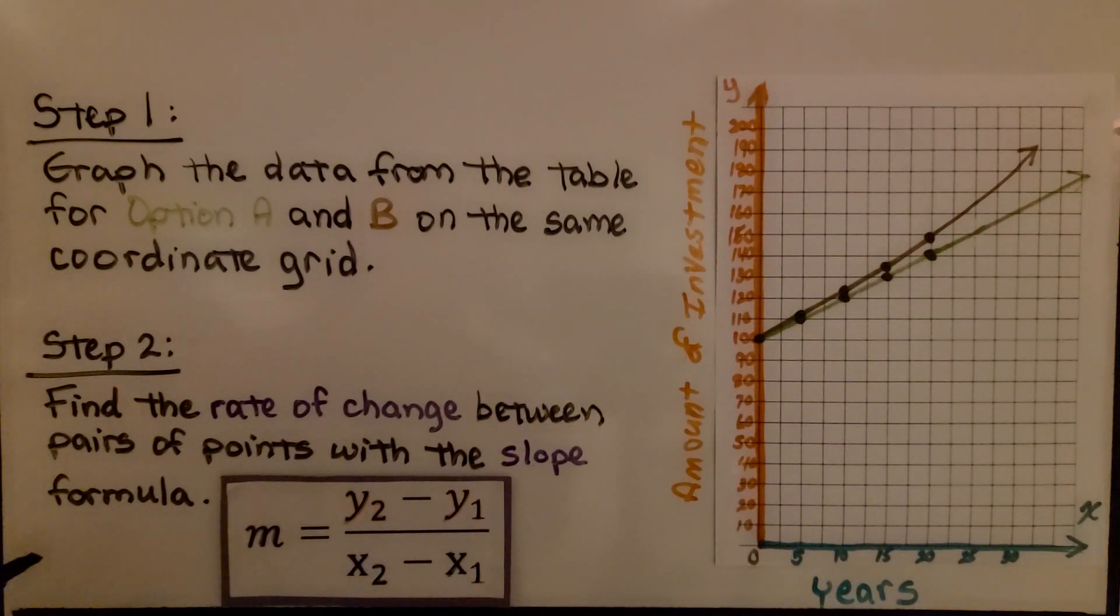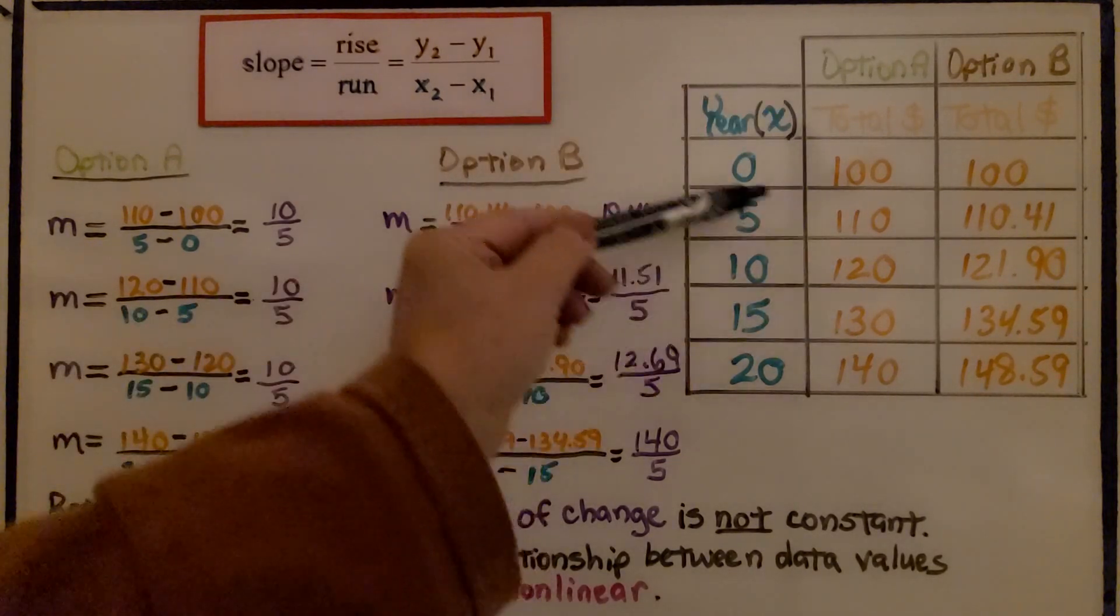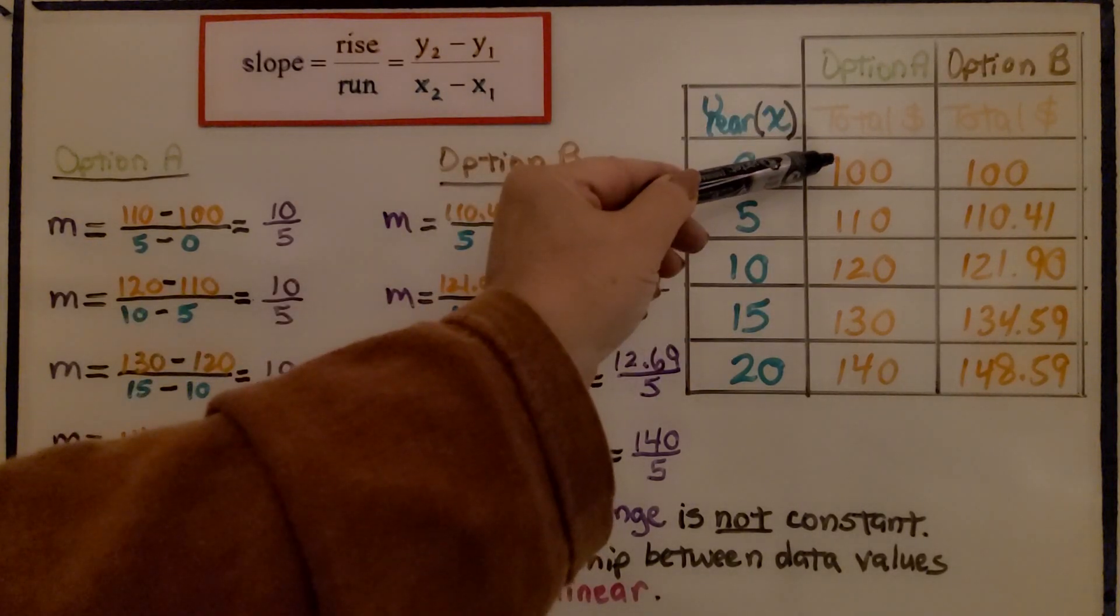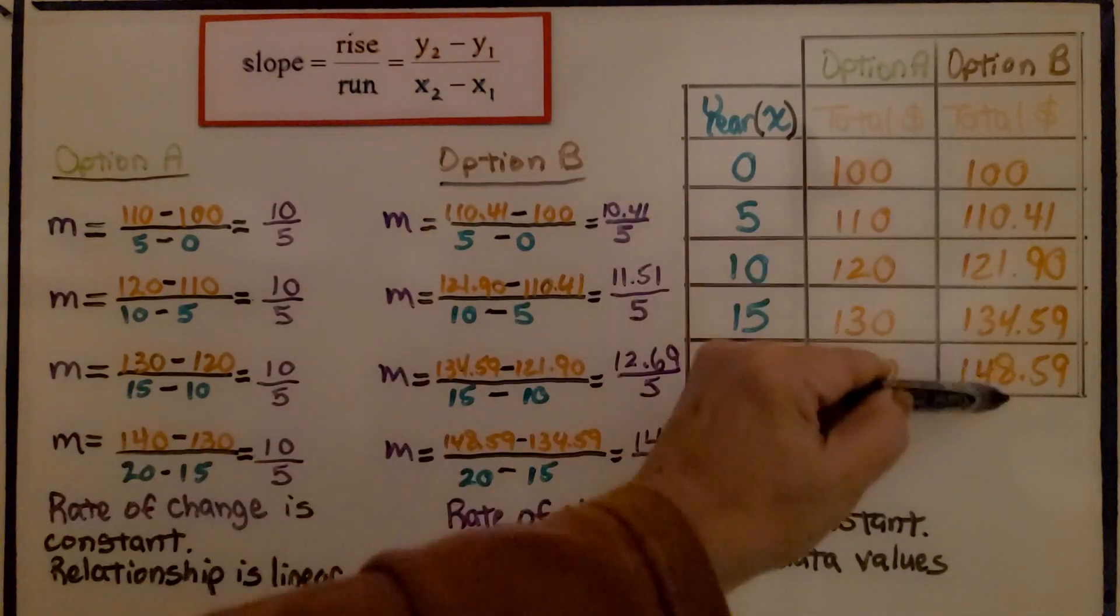The second step is to find the rate of change between pairs of points with the slope formula. We can use the table, and for option A, here's our x value and here's our y value. And for option B, here's our x value and here's our y value.